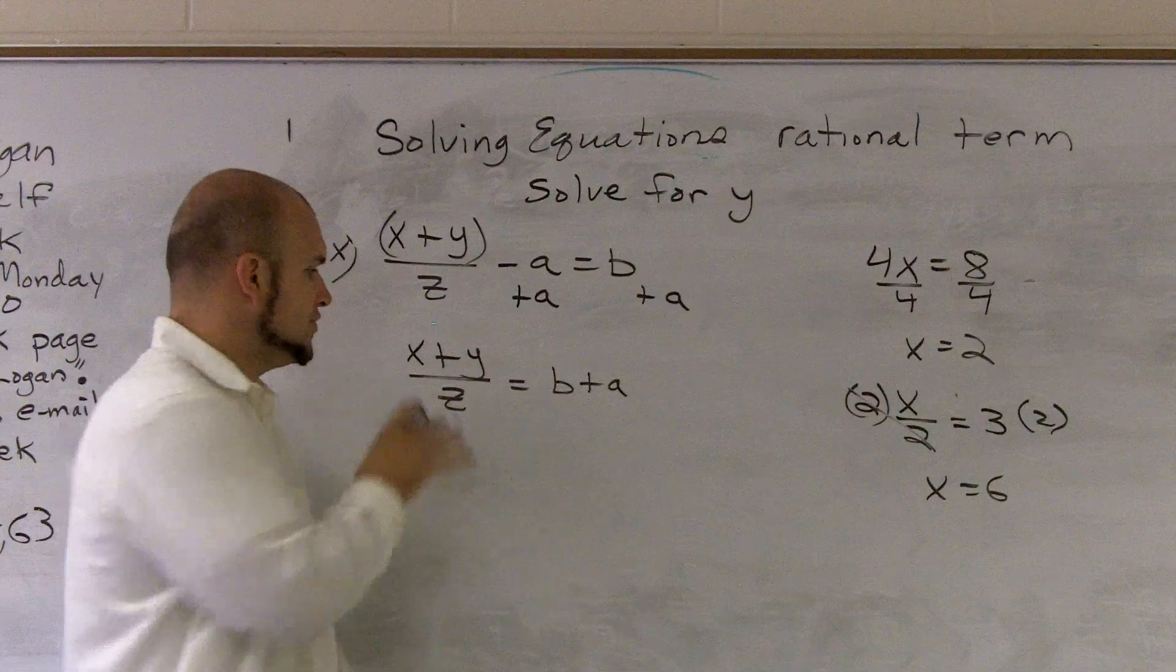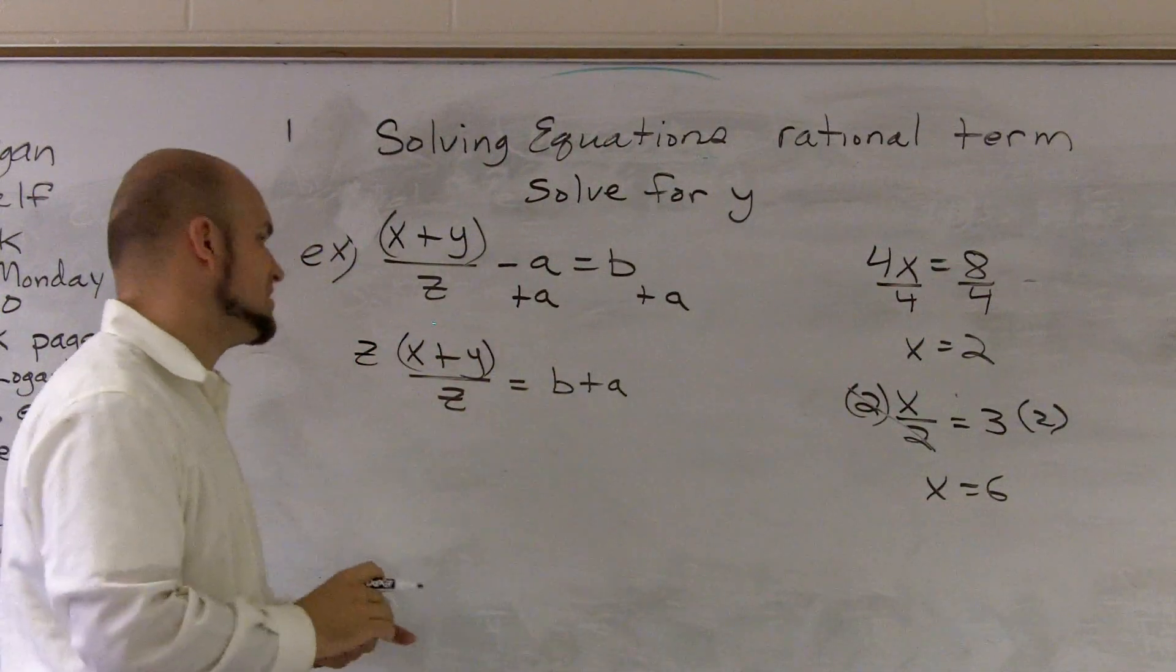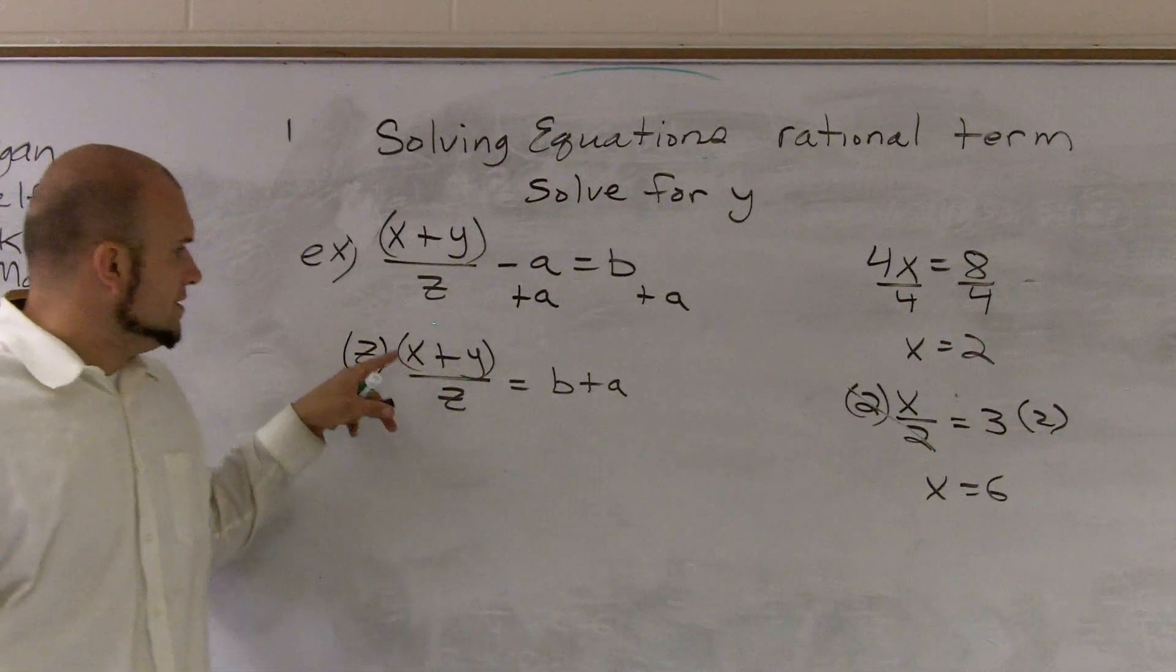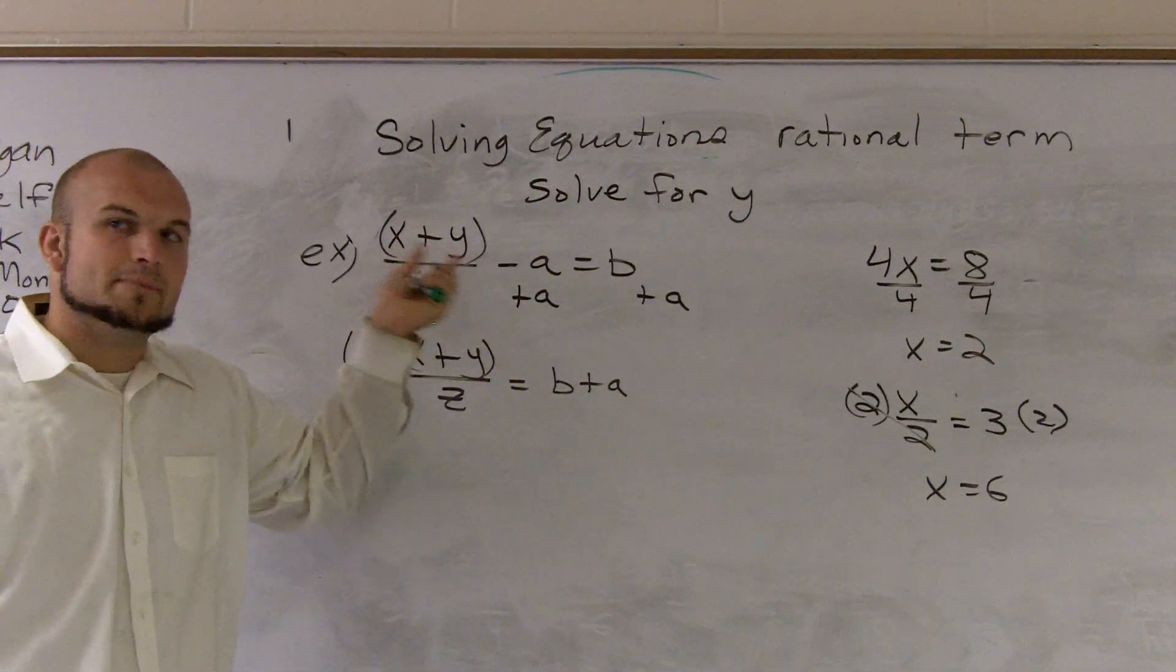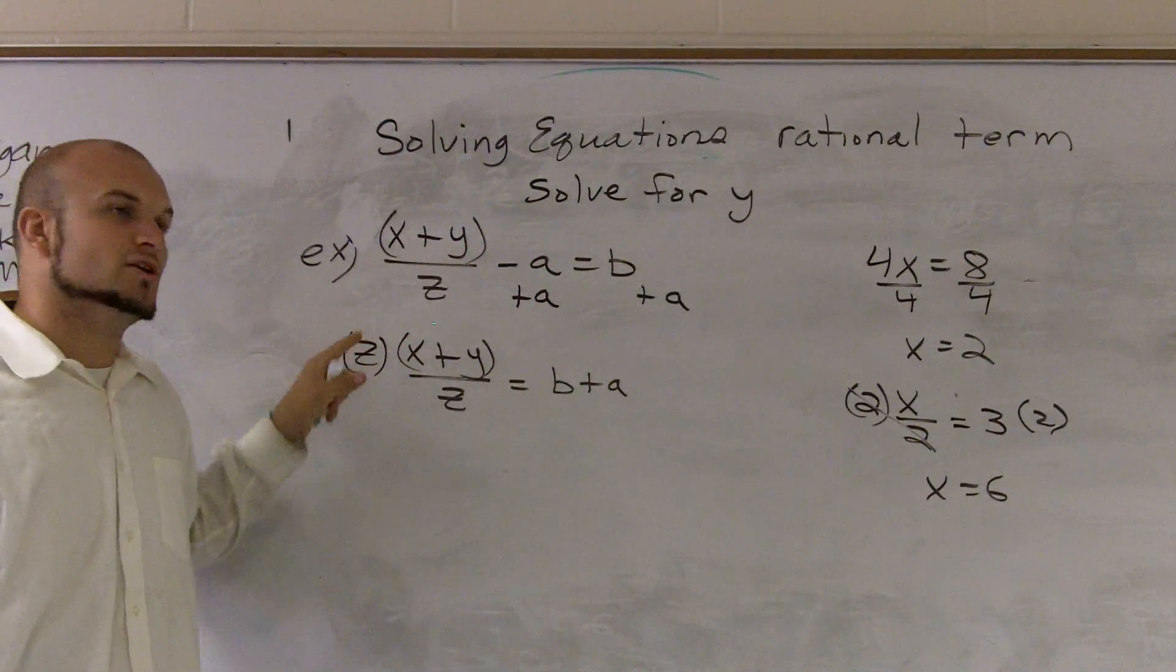Now, I'm going to multiply by z on both sides. And what I'm going to do is remember to keep the parentheses around there, because when you multiply on the z, you guys have to remember that these are two separate terms. They're separated by an addition and subtraction sign. So when you multiply, you have to multiply by both of them.